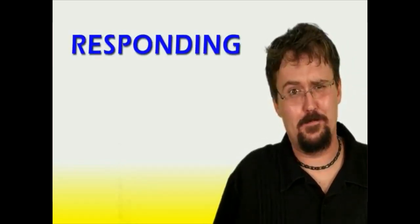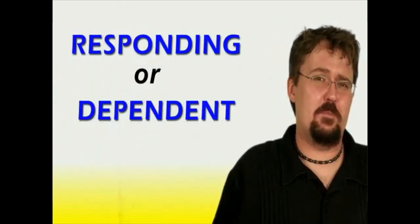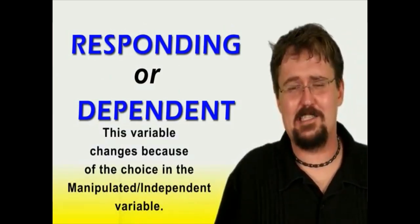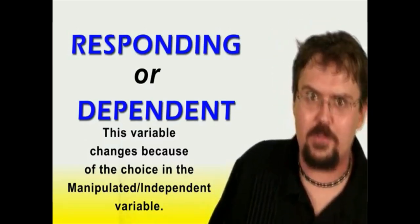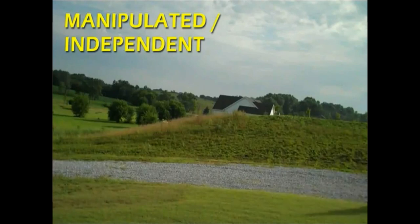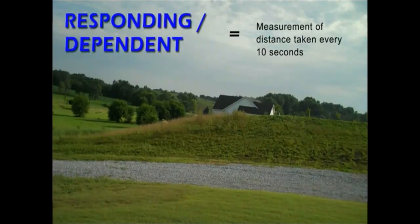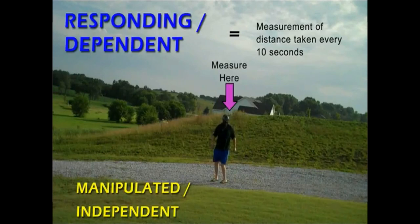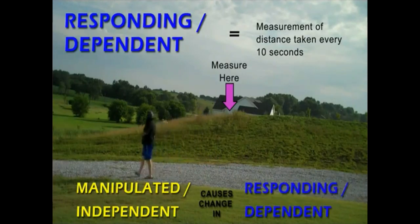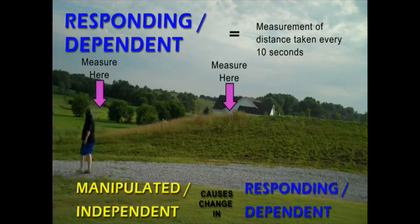The other type of variable is the responding variable, or dependent variable. The responding variable changes or responds because of the choices we made in the manipulated variable. In the walking example, the distance being covered is responding to the amount of time chosen to measure by. The distance is dependent on how long between time measurements — distance is increasing because we've chosen to measure after every 10 seconds.